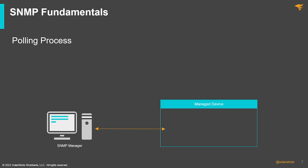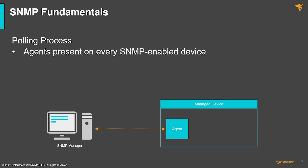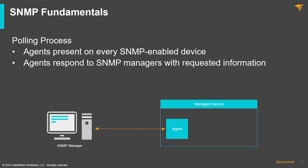Within a managed device, there is what we call an SNMP agent. The SNMP agent is a small piece of software or program that collects management information from different network devices and makes it available to the SNMP manager. The key function of the SNMP agent is to store and retrieve management information from network devices. It also signals an event and acts as a proxy for non-SNMP network devices.